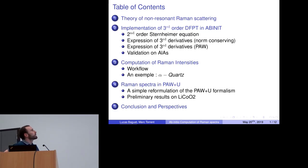At first I will briefly introduce the theory of non-resonant Raman scattering. In the second part, I will present the implementation we have done in the Abinit package. As I already talked about this part two years ago at Frégis, I will not go into much detail. Then I will present the workflow needed to compute Raman intensities and show an example for the alpha quartz phase. And at last before concluding, I will show how we adapted the PAW plus U formalism to do Raman spectra with the plus U terms and show preliminary results on LiCoO2.